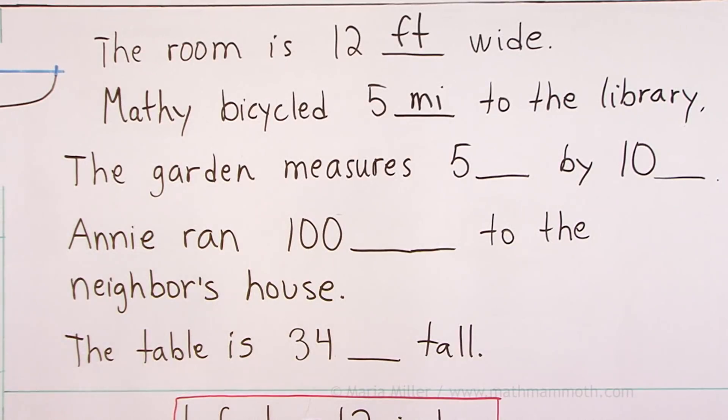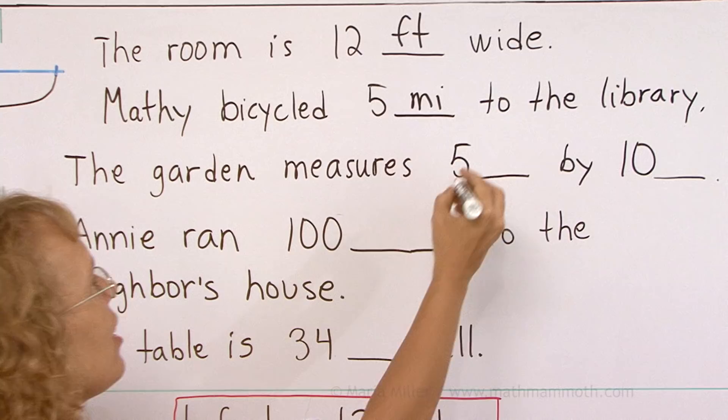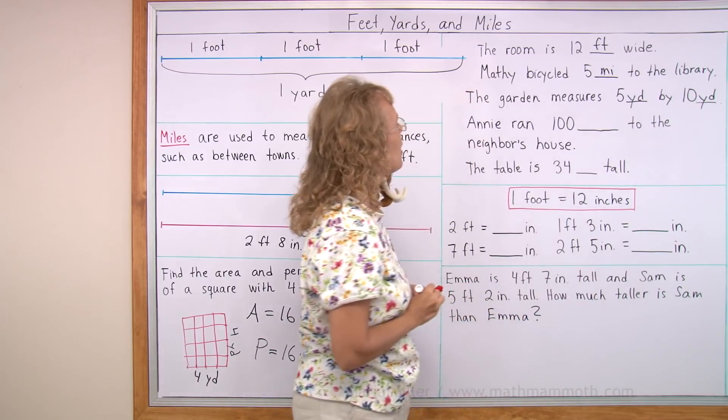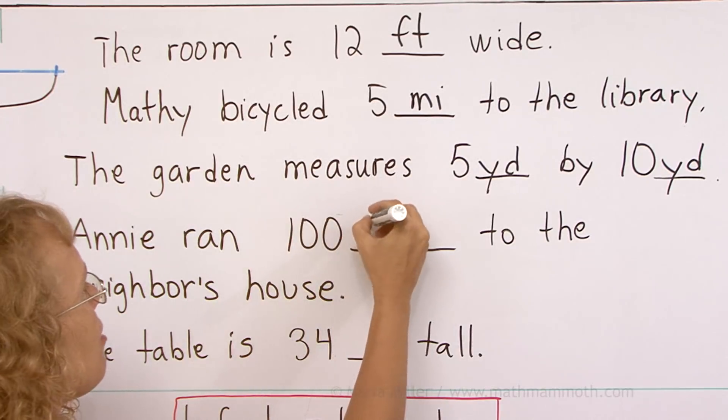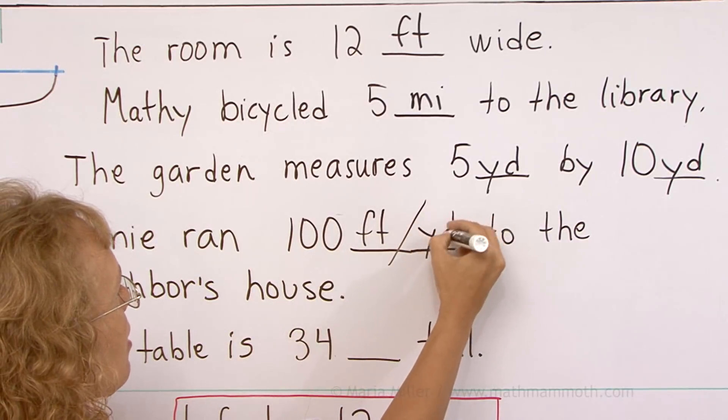The garden measures five something by ten something. Five inches? No. Can't be inches. Can't be miles. But it could be feet or yards. However, even five feet is not a very big garden, so I think it might be yards. Let's put yards here. That works best. Annie ran 100 something to the neighbor's house. Here, two units are possible. It could be she ran 100 feet. But then again, maybe she ran 100 yards. Three times as much.